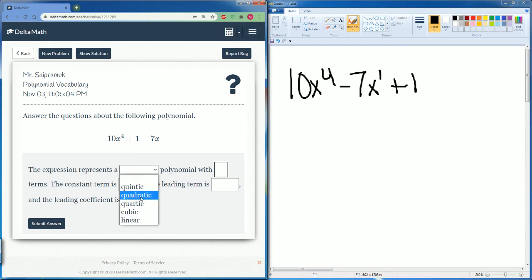So it is a, quadratic is 2, quintic is 5, quadratic, it is this one, polynomial. It has three terms. The constant term here is a 1.